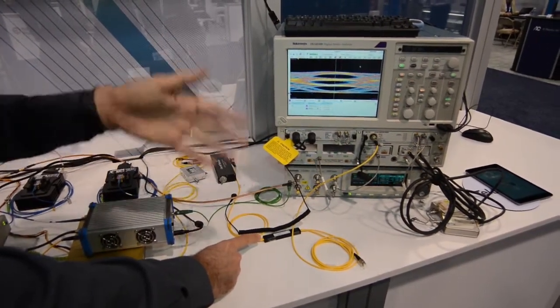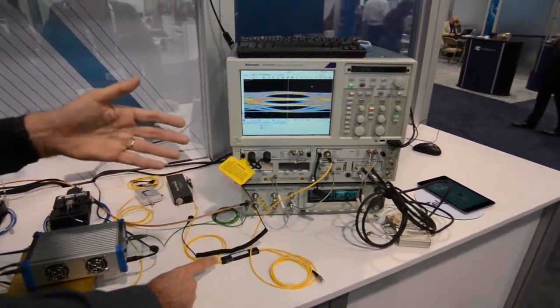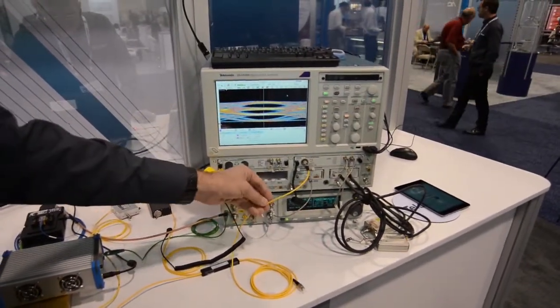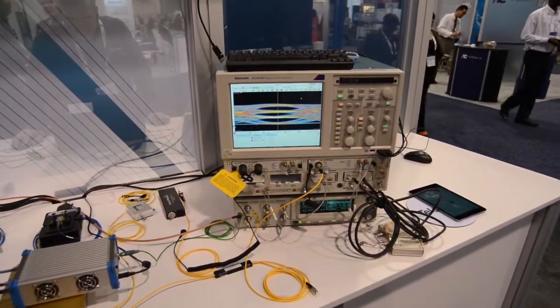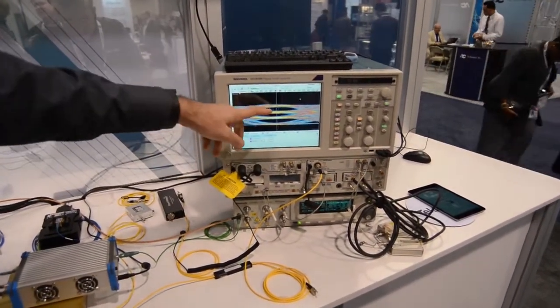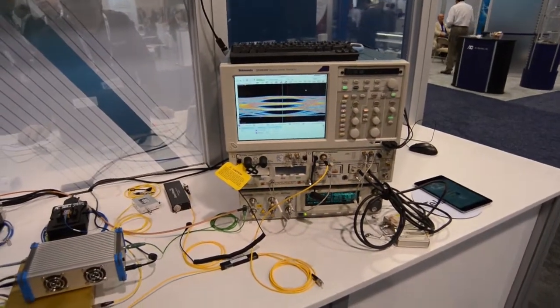So two bits per UI, so 56 gigabit board that yields 112 gigabit per second through serial on this one fiber. And you can see the eye is clean opening on every level. You have three clean eyes.